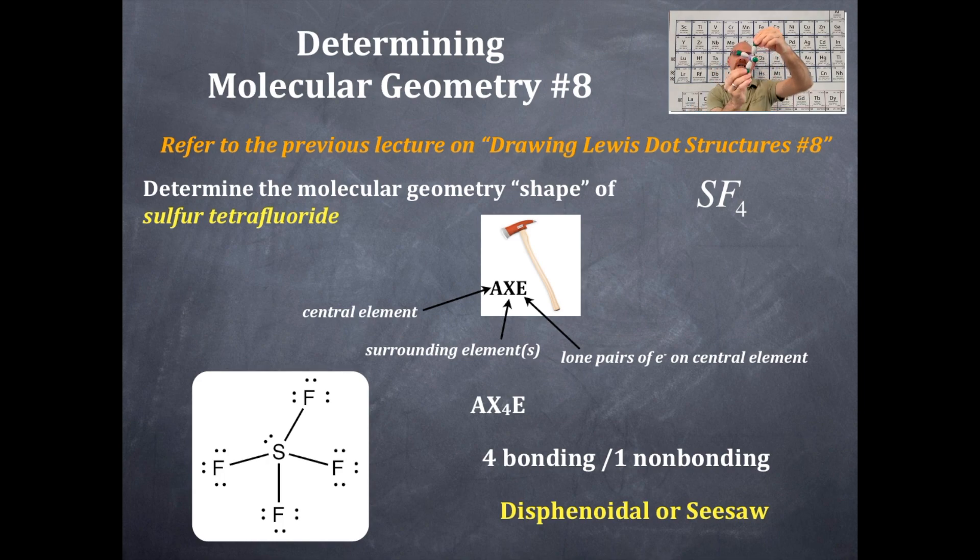So that is disphenoidal or seesaw. And again, the reason the lone pair is on the central region where the trigonal planar structure is, is because within that region, you have bond angles of 120 as opposed to the 90 at the poles. So you never have the lone pairs at the poles on a trigonal bipyramidal basic domain structure.